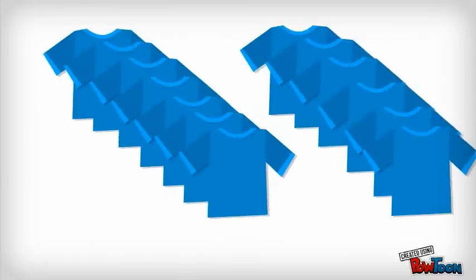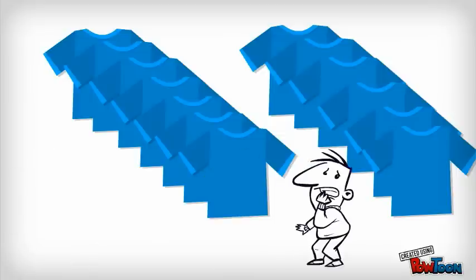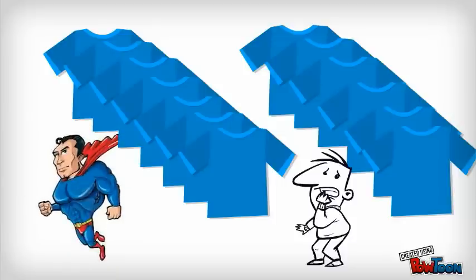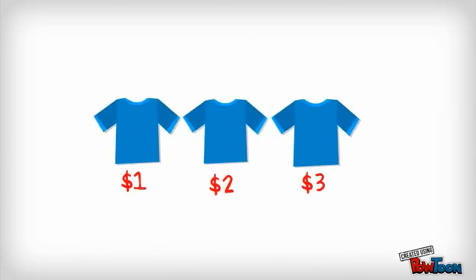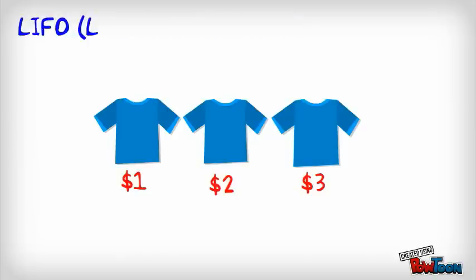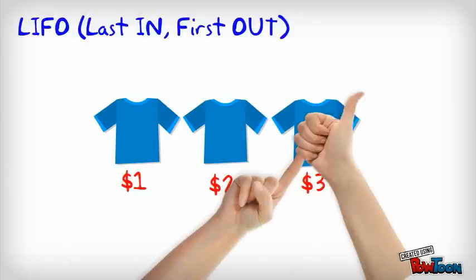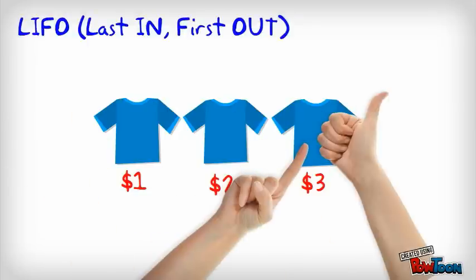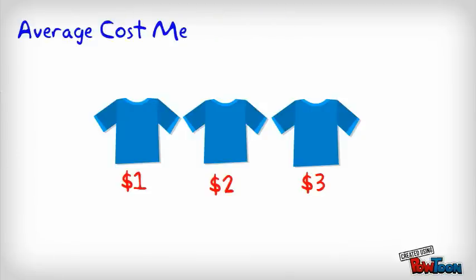Instead of three, let's assume we're selling thousands of shirts. Do you think that anybody would have the resources and time to specifically identify which shirt was picked up by their customers? Chances are you're not Superman. So to be more efficient, we have to rely on assumptions. The first assumption is FIFO — first in, first out — the products we buy first are the first to be sold. Second is LIFO — products we buy last are the first to be sold. And finally, we have the average cost method, where we find the average cost of each shirt and apply it to each sale.